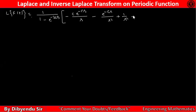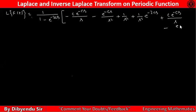And the second part is: c·e to the power minus cs divided by s, minus e to the power minus cs divided by s². You can see that the terms c·e to the power minus cs divided by s in both parts are cancelled.